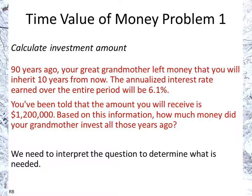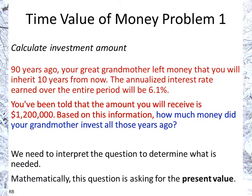We need to interpret the question to determine what's needed here. We're trying to find out how much money your grandmother invested all those years ago. Although it's in the past, mathematically this is asking for the present value — using the present value/future value concept — because it's a time in the past versus a time in the future: 90 years ago versus 10 years from now.